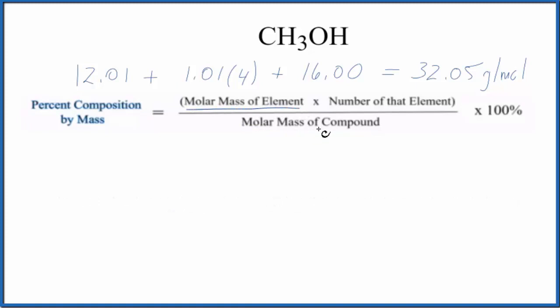So let's start with the carbon. Carbon on the periodic table has an atomic mass of 12.01 grams per mole. We only have one carbon, so when we multiply that by the number of the element we're just multiplying by one, so we'll leave it like this. Then we divide by the molar mass of the compound.